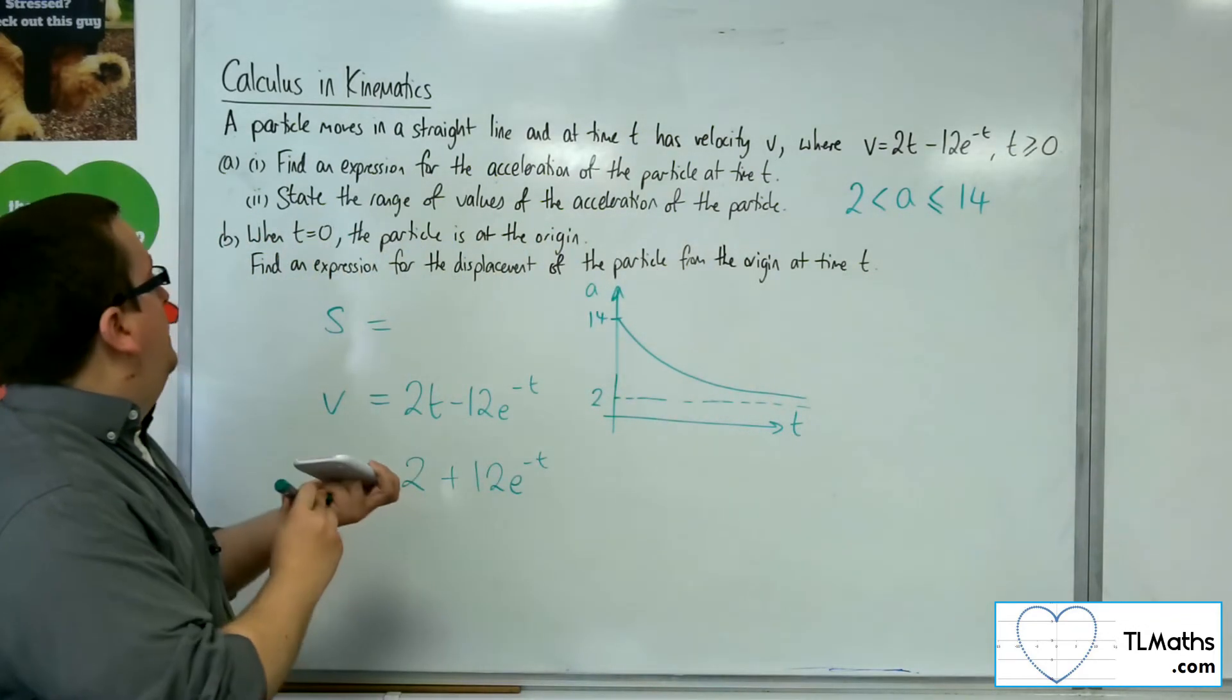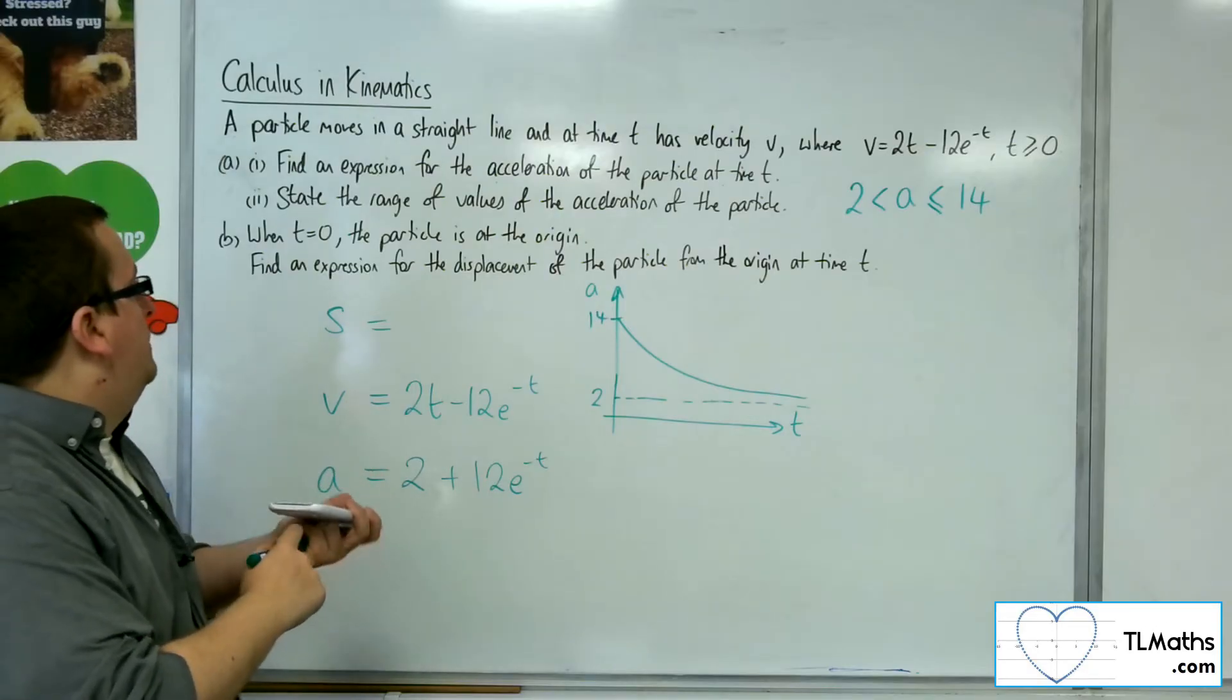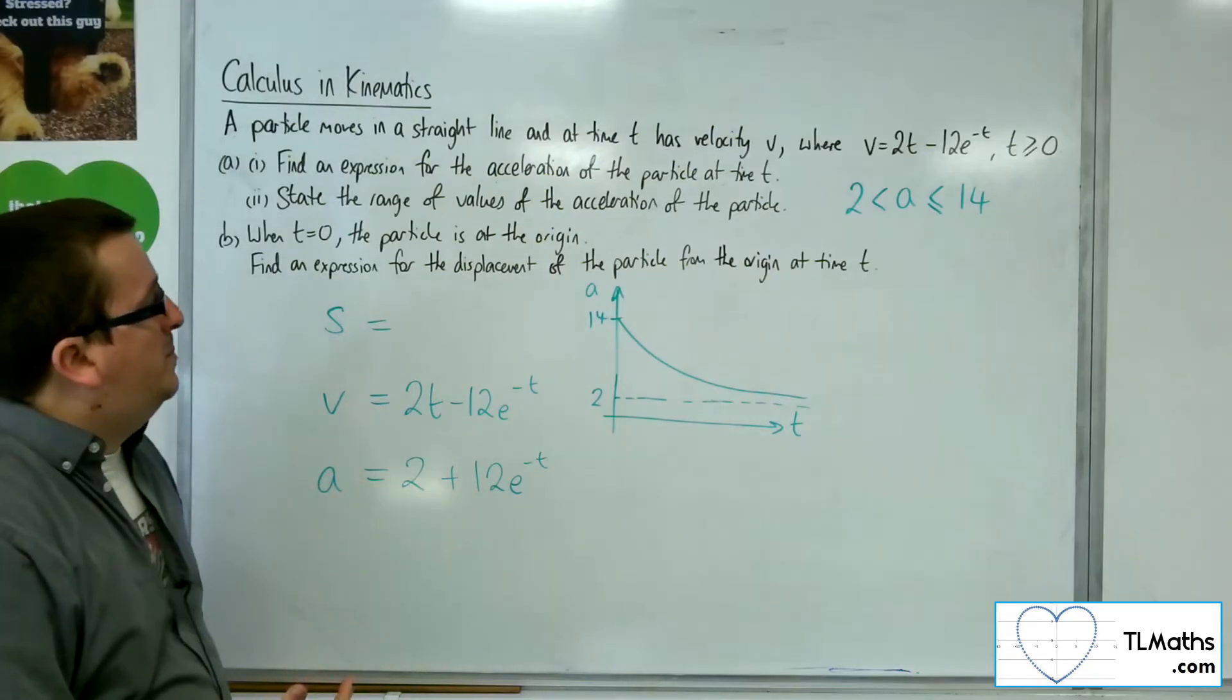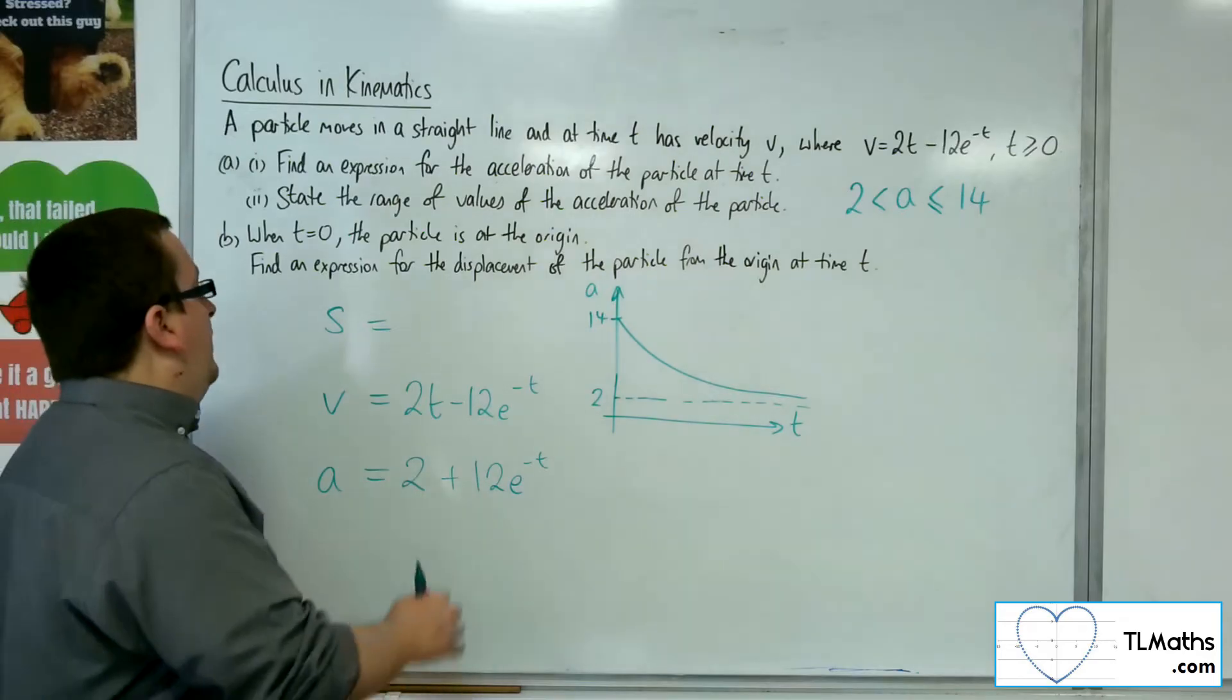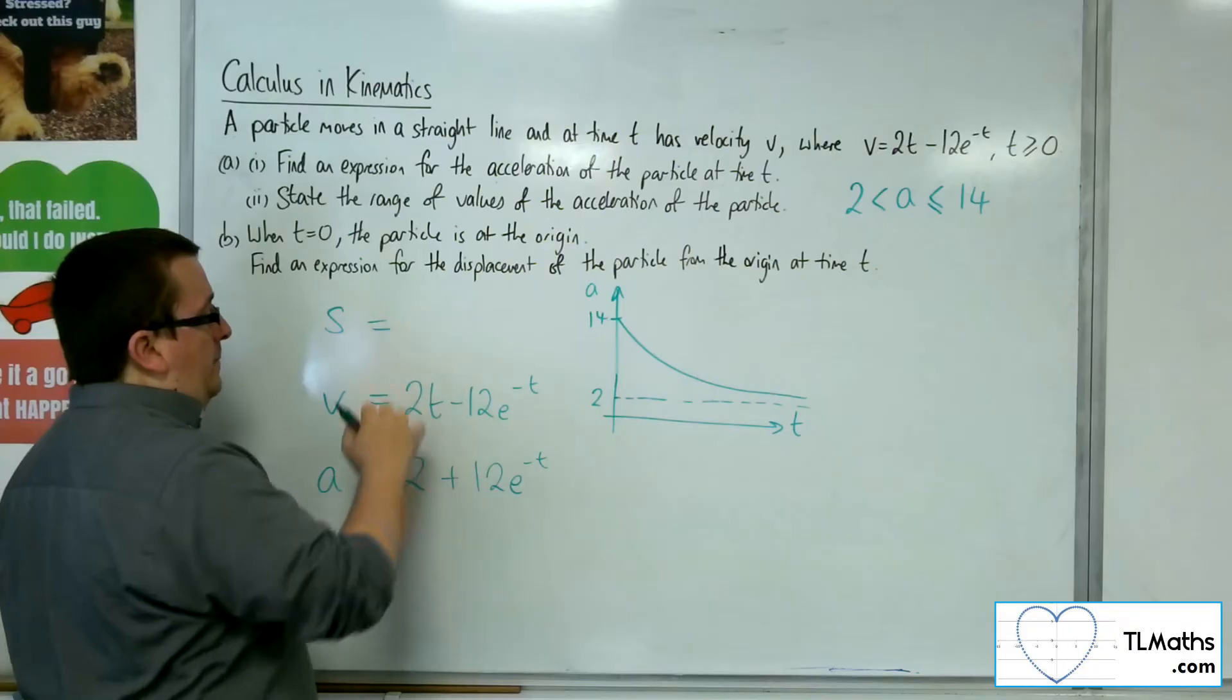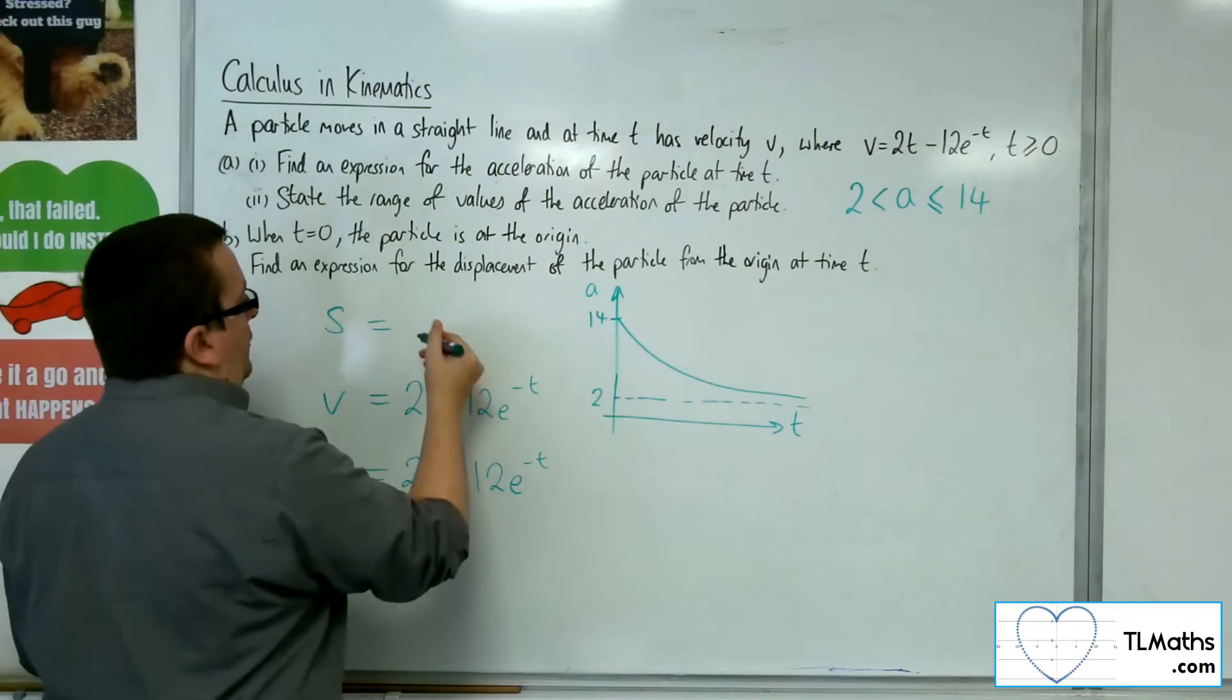So the last question. When t is 0, the particle is at the origin. Find an expression for the displacement of the particle from the origin at time t. So the displacement, I need to integrate back up. So 2t integrates to t squared.